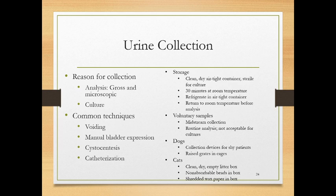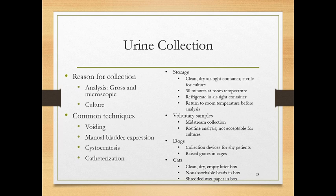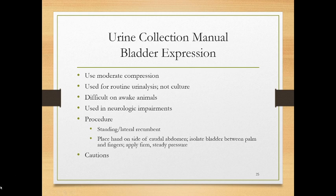Voluntary or free-catch samples are good for routine analysis, specific gravity, and detecting bacteria or blood in urine, but not for culture — they'll produce too many false positives. For shy dogs, use a collection ladle with a long handle, or place the animal in a raised-grate cage. For cats, use an empty litter box or non-absorbable litter beads or shredded wax paper.